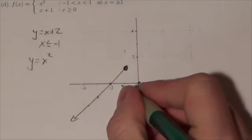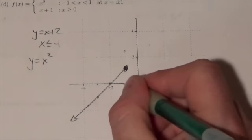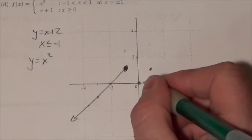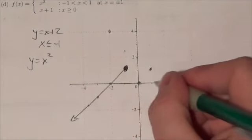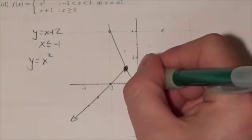And if I go 1 to the right, 1 up, 1 to the left, 1 up, 1 to the right, 1 up, 2 to the left, 4 up, 2 to the right, 4 up, my parabola is going to look something like this.